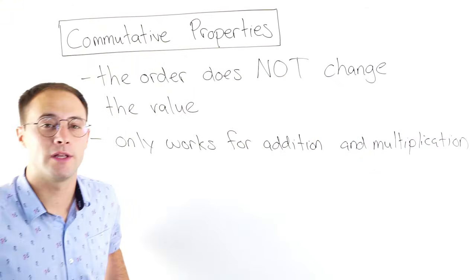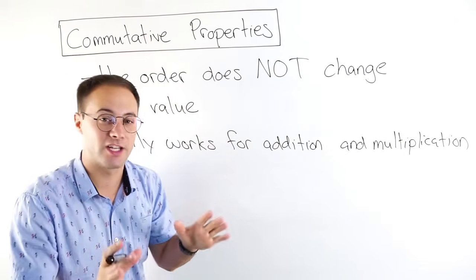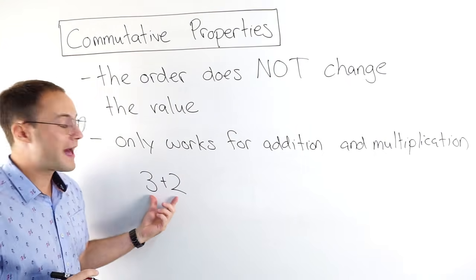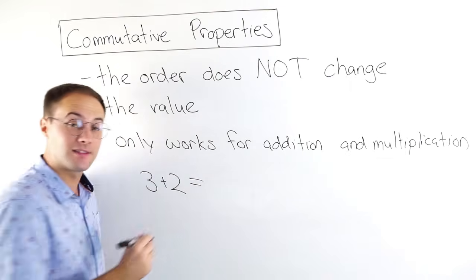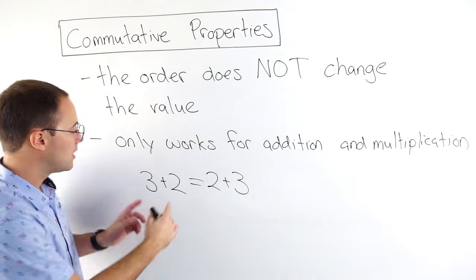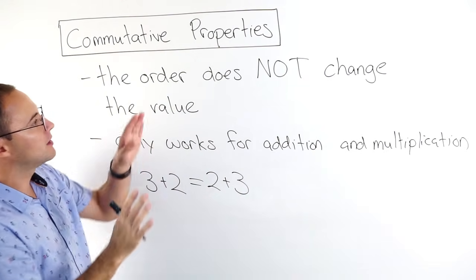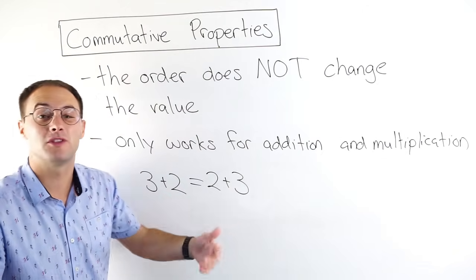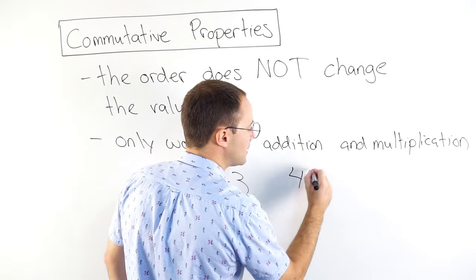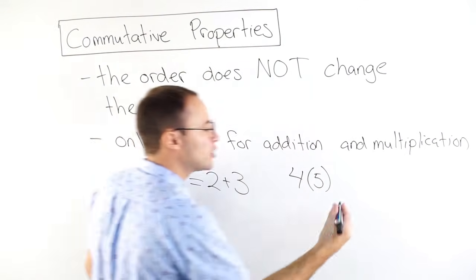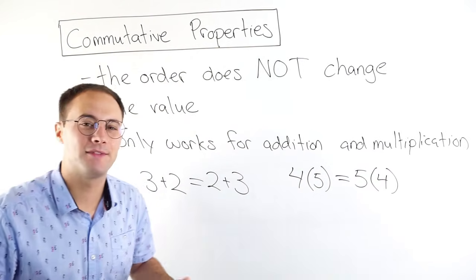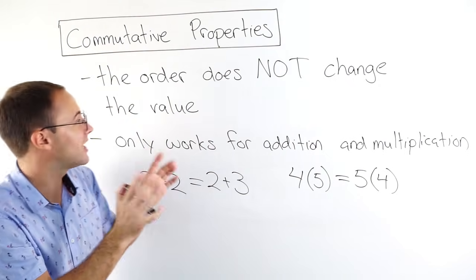So for the commutative property of addition, we could have something like 3 + 2. That expression is equivalent — it has the same value as 2 + 3. We change the order, but the value does not change. Three plus two is five, two plus three is five. It works for addition, and it can also work for multiplication: 4 times 5 is equivalent to 5 times 4. They both have the same value.